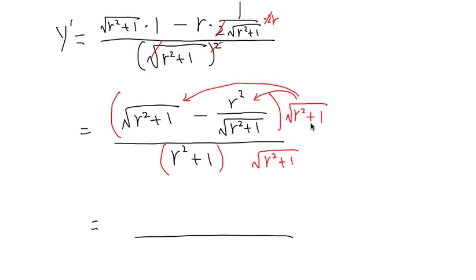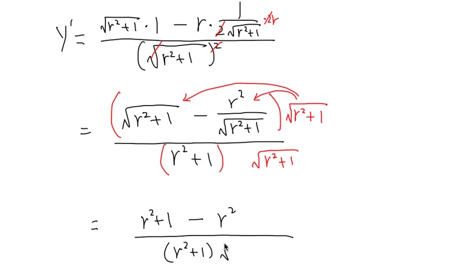Square root of r squared plus 1 times square root of r squared plus 1 — the square roots cancel out, giving you r squared plus 1, the regular version. Then you minus: when you distribute, those two cancel, and you just have minus r squared. On the denominator, you have parenthesis r squared plus 1 times square root of r squared plus 1. On the top, r squared cancels out with negative r squared, so altogether on the top you only have a 1.